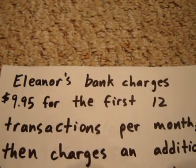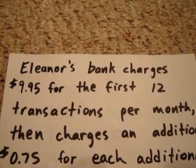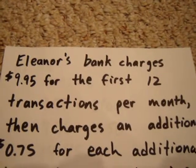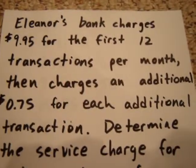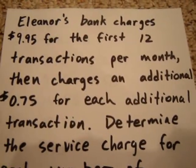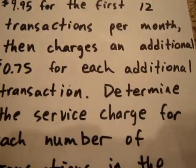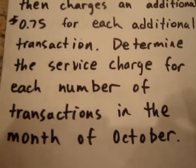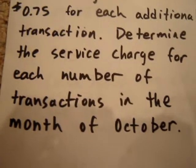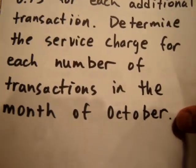For our next question, we see that Eleanor's bank charges $9.95 for the first 12 transactions per month, and then charges an additional $0.75 for each additional transaction above 12. We want to know the total service charge for each number of transactions in the month of October.